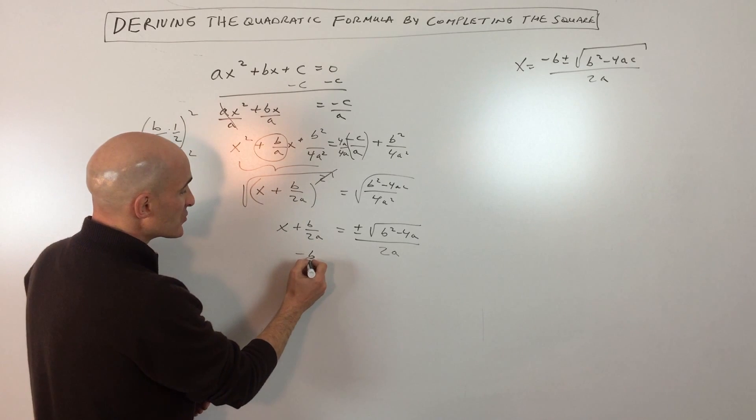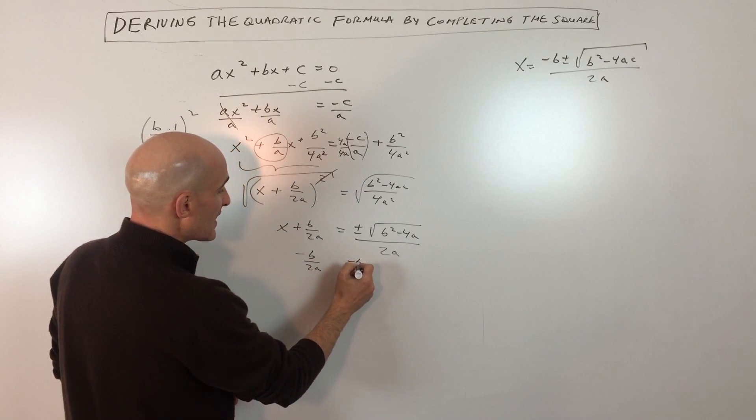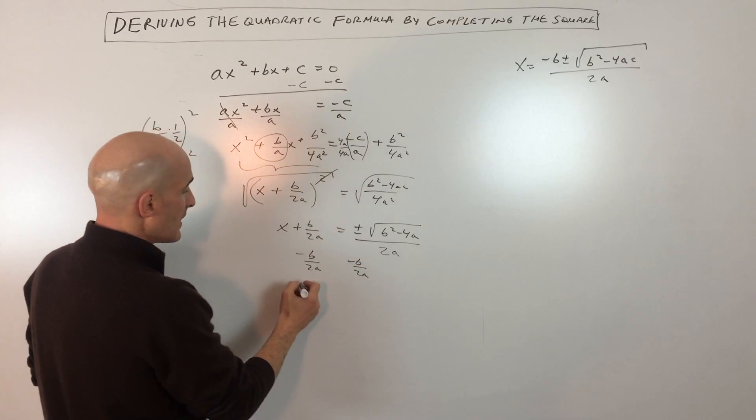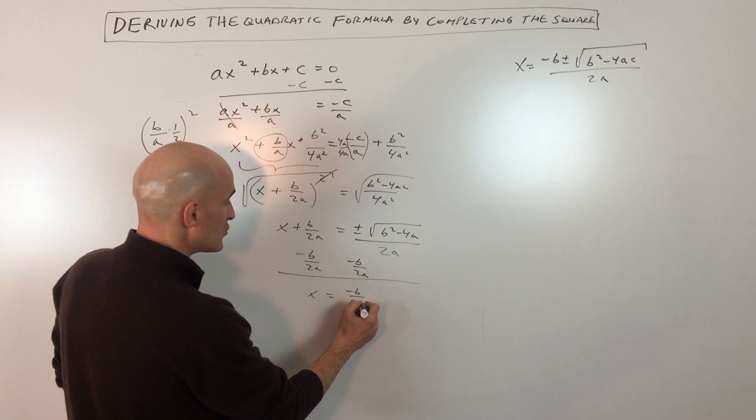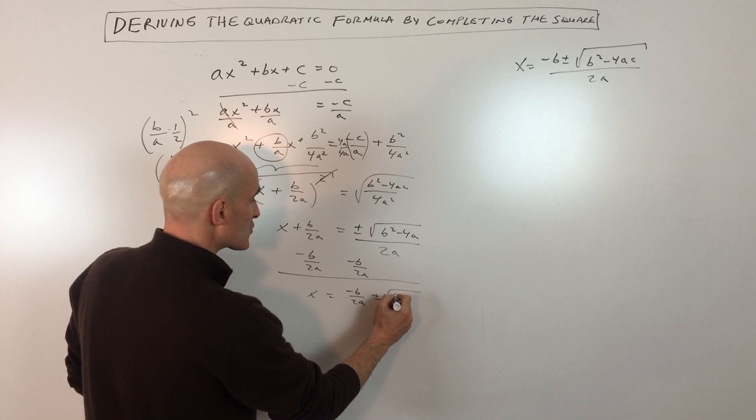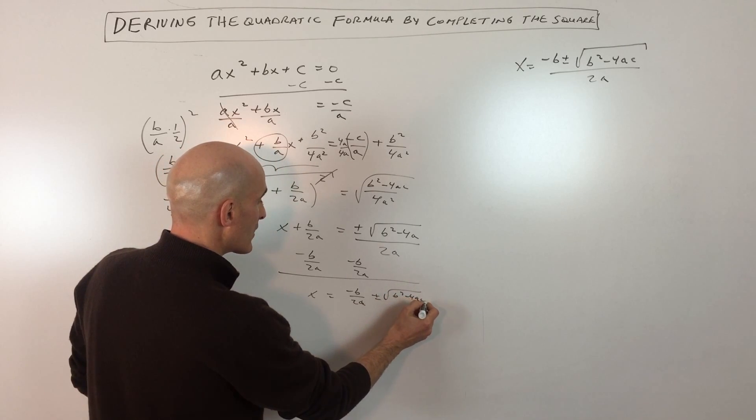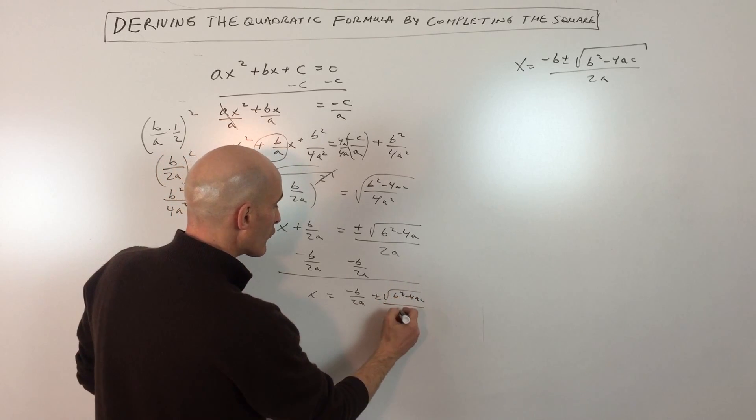And then the last part here is we're just going to subtract b over 2a from both sides of the equation, and so that's going to give us x equals negative b over 2a plus or minus the square root of b squared minus 4ac all over 2a.